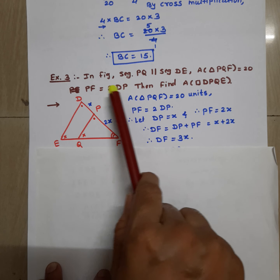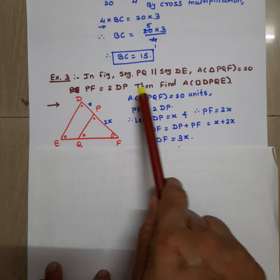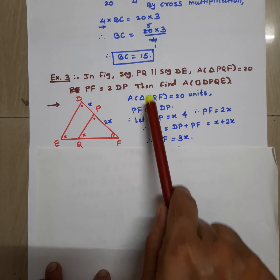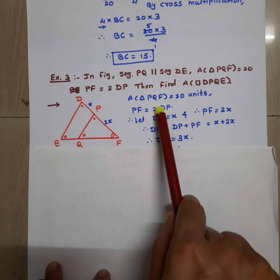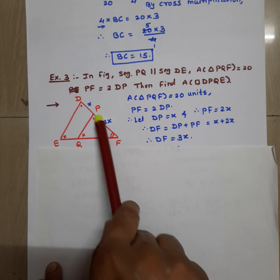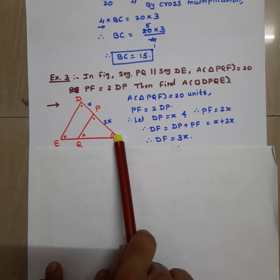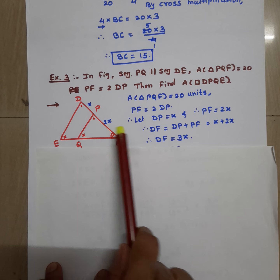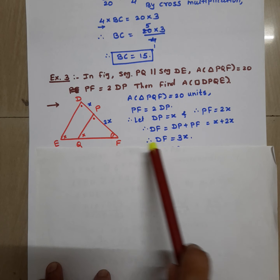Given that PF is equal to 2 times DP, assume DP is equal to X, so PF will be 2X. Since D, P, and F satisfy betweenness, DF equals DP plus PF. Substituting X and 2X, the complete value of DF is 3X.